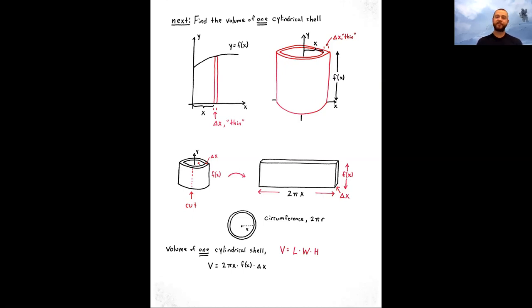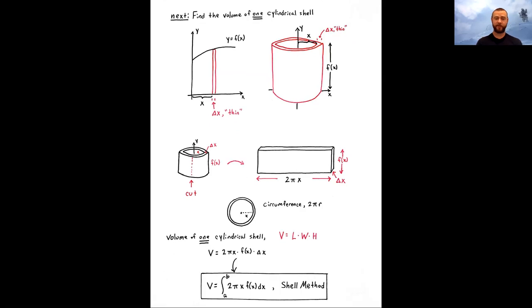That's the volume of one shell. We then add, sum, or integrate all those cylindrical shells. So this volume formula for one shell, in the limit as we use more shells, passes to this exact volume formula: the integral from a to b of 2πx times f of x, integrated with respect to x. f of x is the upper edge that gives the profile for the solid, determining the heights of the shells. x is the distance from the axis of rotation to the shell. Be careful — this is the shell method. What a lot of students miss is that factor of x. Notice the formula: it's 2πx times f of x. Don't forget that factor of x.